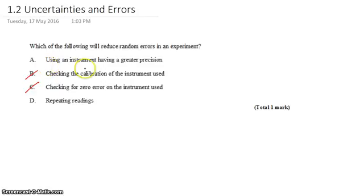Option A is interesting, using an instrument that has a greater precision. So this would mean like using a ruler that measures to the nearest centimeter and saying, no, that's not precise enough. I want a ruler that has markings on millimeters. That might help reduce random errors.